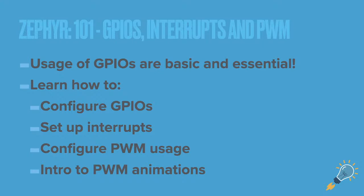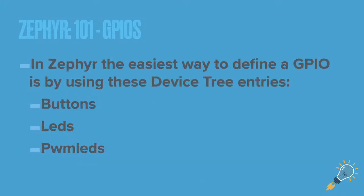Your microcontroller is basically useless without GPIOs — you can use it for certain things like Wi-Fi or Bluetooth, but without a GPIO you're dead in the water. We're going to be talking about that functionality: configuring GPIOs, setting up interrupts, and then separately, configuring a PWM device, with a quick intro on animation to give you an idea of how to do that in your own code.